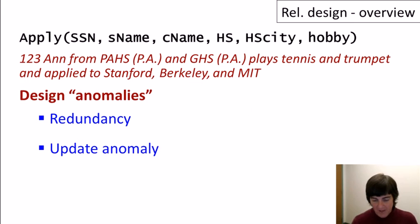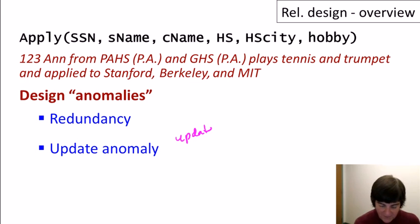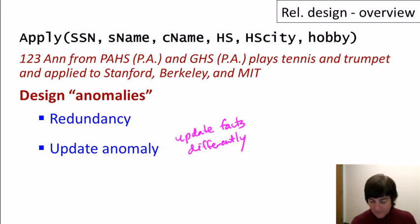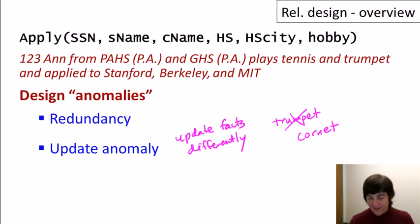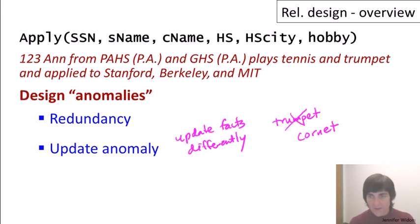The second type is an update anomaly, which is a direct effect of redundancy. Update anomalies mean you can update facts in some places but not all, or differently in different places. For example, if we decide to rename Ann's hobby from 'trumpet' to 'cornet,' we might modify only three of the four instances where that fact is captured, ending up with what's effectively an inconsistent database.